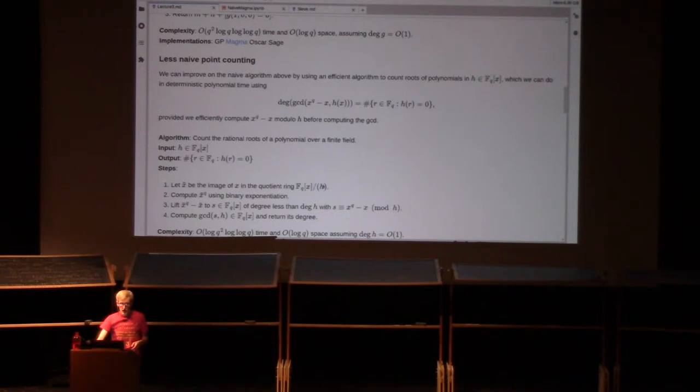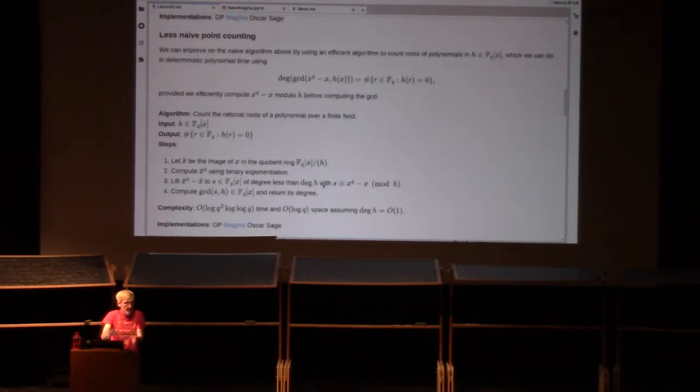And so this root-finding algorithm, just as a subroutine, has quite good complexity. I realize there's a typo there. The 2 should be on the log. It's quantity log q squared times log log q time and O(log q) space, assuming h has degree O(1). Things get more interesting when you start thinking about polynomials of larger degree, but for our case, this simple algorithm is the optimal algorithm.